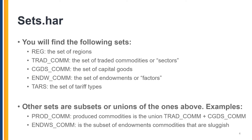For example, PRODCOM is the set of produced commodities, which is the union of traded commodities and capital goods. Another example is endowscom, which is the subset of endowment commodities that are sluggish. This covers the most important sets in this file.